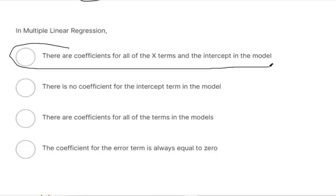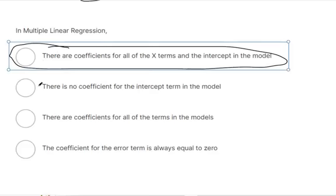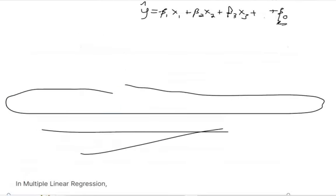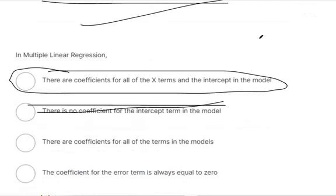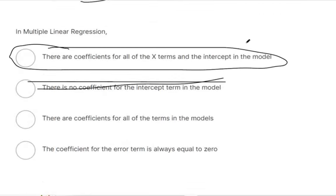Okay, so that's right. Let's see why the other ones are wrong. This is wrong because we said there is that coefficient down here for the intercept. There are coefficients for all the terms in the models. I mean, that's true, too. I guess it's just missing the intercept as well. So I don't know. That's a tricky one.